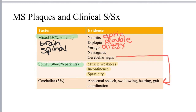Finally, a small subset of patients — about 5% — present with a cerebellar primary presentation. These are patients who have lesions primarily in the cerebellum of the brain or the brain stem. The primary signs and symptoms associated with this presentation are abnormal speech, swallowing, hearing, or gait.